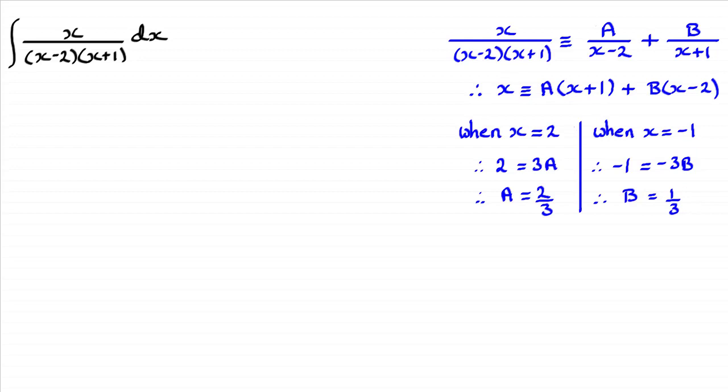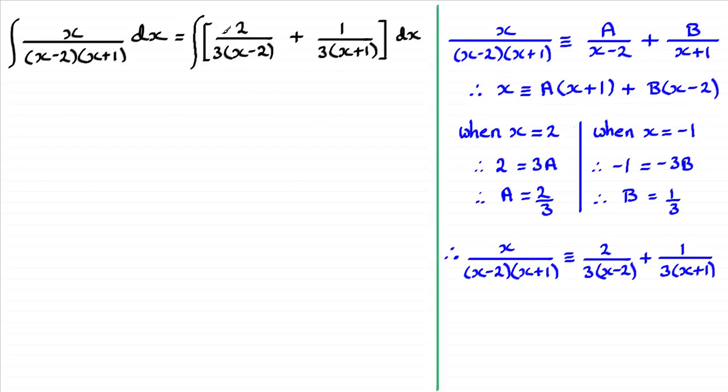So we can substitute these values of A and B into here. And what we get is this result here. And notice that I haven't written 2/3 all over x-2 and 1/3 over x+1. It's much easier to multiply top and bottom of each fraction by 3. And you get a much more simplified fraction. Okay? So this is what we've got. And I can put these fractions here back into this integral. So I can rewrite that integral as this.